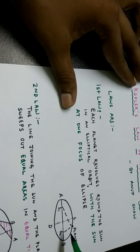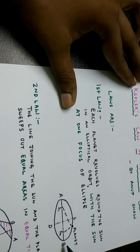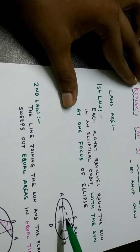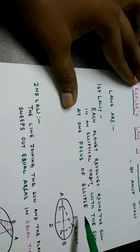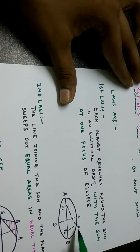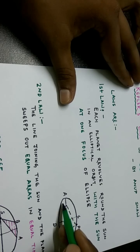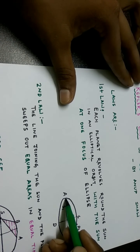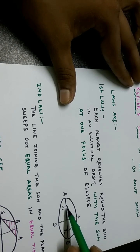I'd like to say something about the ellipse. This line AB is called the major axis, and this one CD is called the minor axis. There are two foci in the ellipse: S1 and S2. In this example, I'm assuming that the Sun is at position S1, so the planet revolves in this path and approaches towards the Sun.